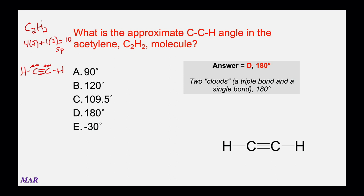A triple bond counts as one cloud. For the answer choices: 109.5° is for tetrahedral electron pair geometries, 120° is for trigonal planar, 90° is for octahedral geometries, 180° applies here for a linear two-cloud geometry. Negative 30° is just a silly answer — technically you could measure in a negative direction, but that's unconventional.